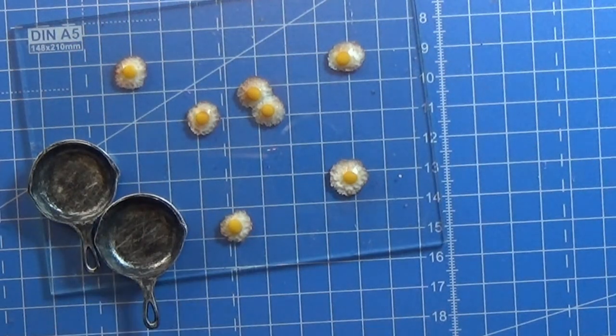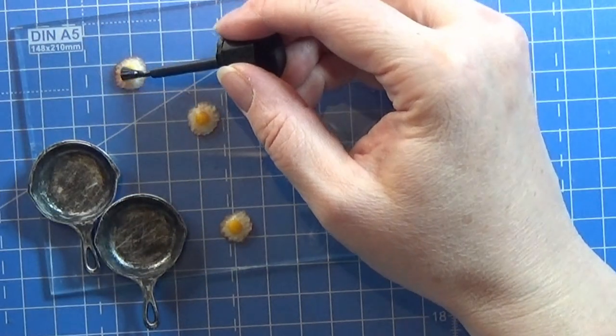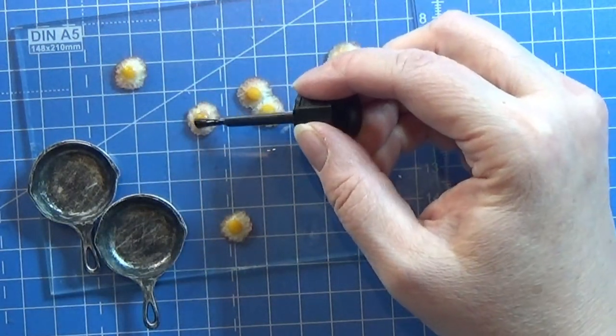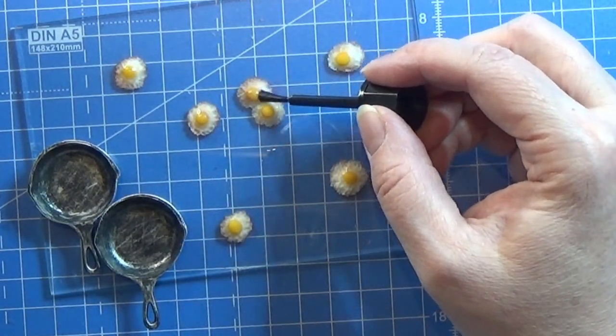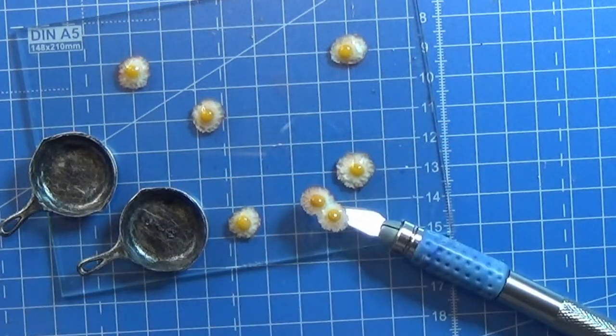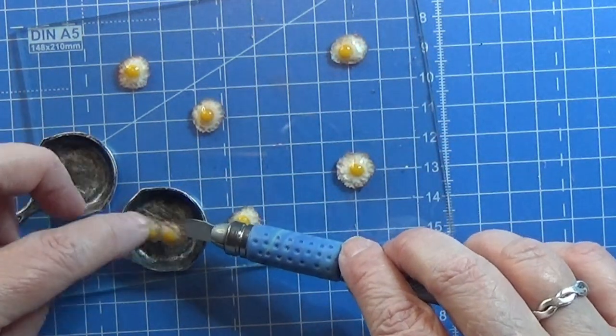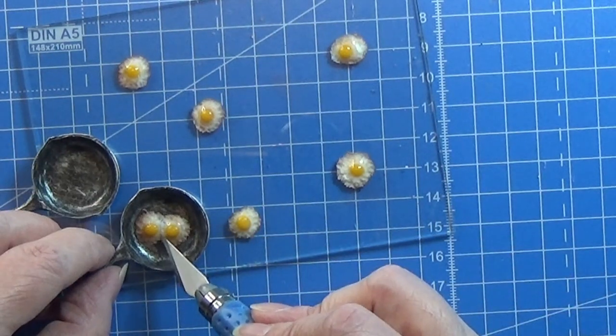Now when the eggs have been baked and cooled down I can glaze them a tiny bit with some Fimo glaze. And then I'm just using my super glue gel to glue these eggs in place.